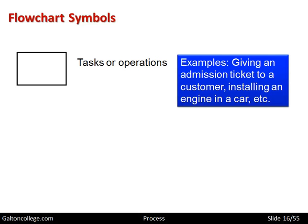Let's look at the symbols. Tasks or operations are represented by little rectangles and we simply type into the rectangle what the task or operation is. For example, giving a ticket to somebody entering a cinema — that's a task. Or installing an engine in a car — that's a task. We'd write the task into this little rectangular box.